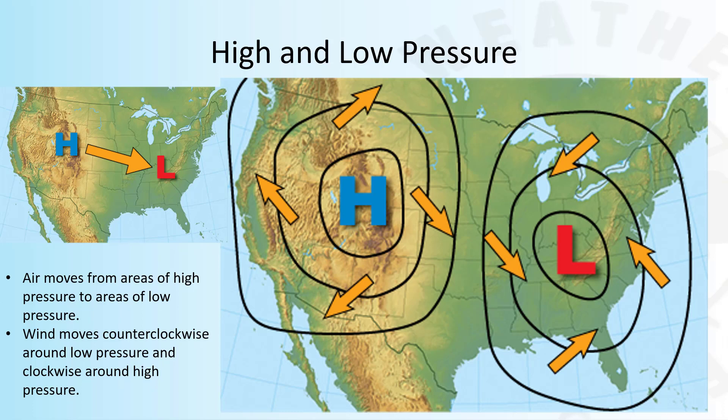The unequal heating of the Earth creates areas of high pressure and areas of low pressure. Air moves from areas of high pressure to areas of low pressure. The arrows show the direction winds are moving. Wind blows counterclockwise around low pressure and clockwise around high pressure.